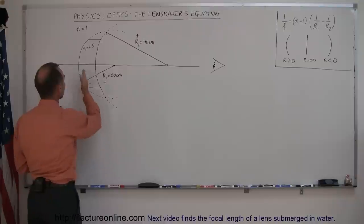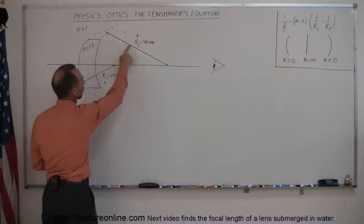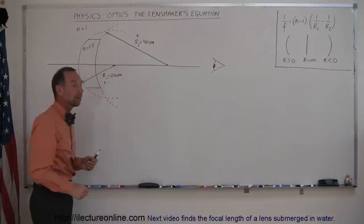The radius of curvature of the front side of the lens is 20 centimeters. The radius of curvature of the back side of the lens, you can see it doesn't curve as much. It's therefore longer, and here it's 40 centimeters.